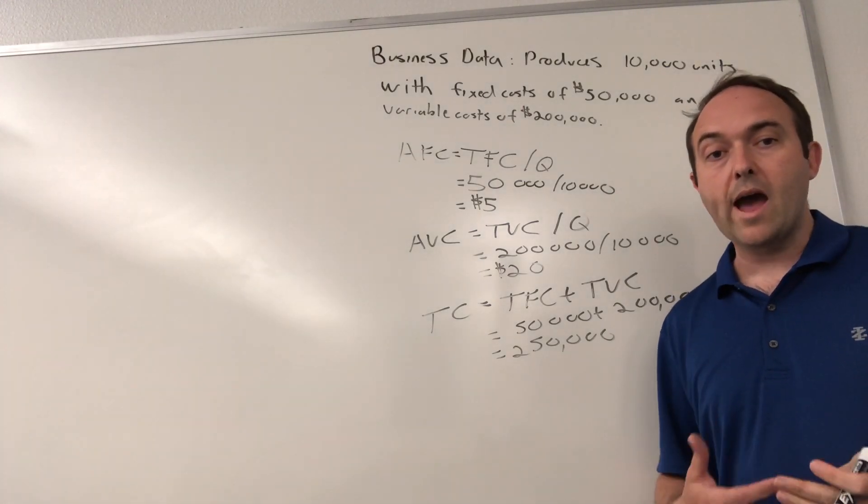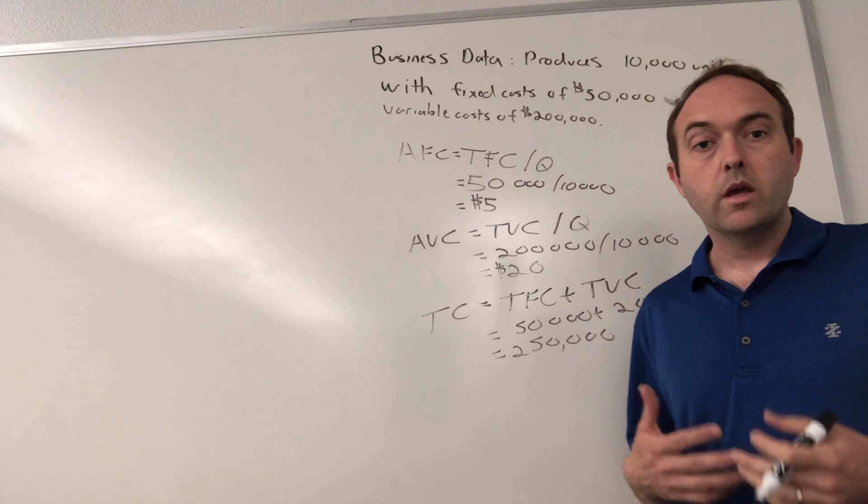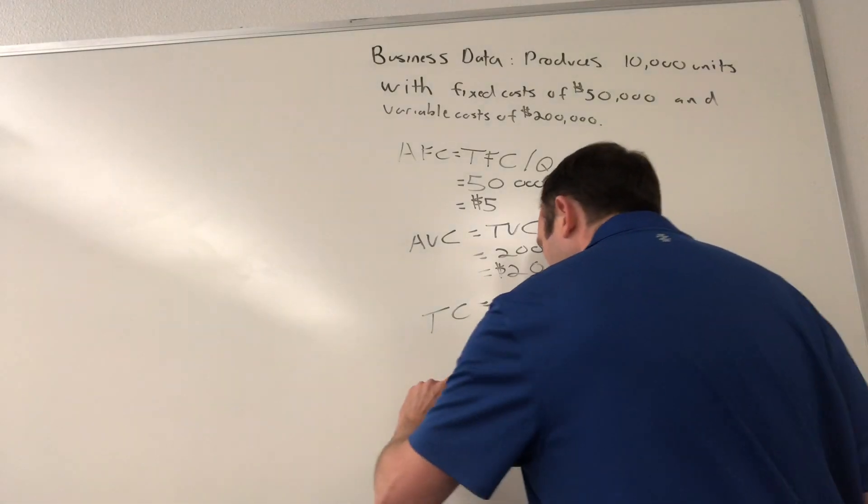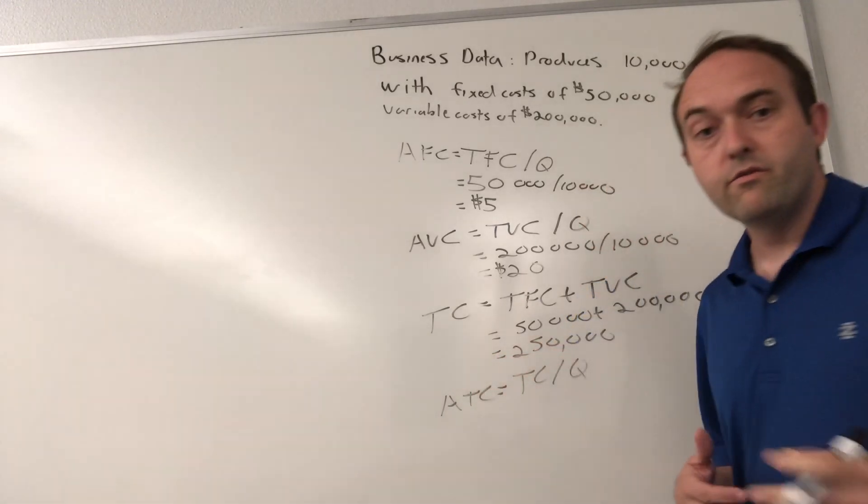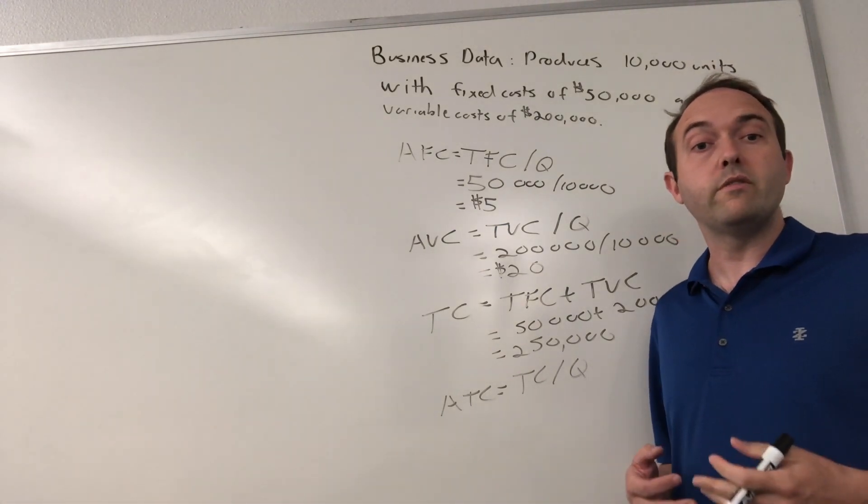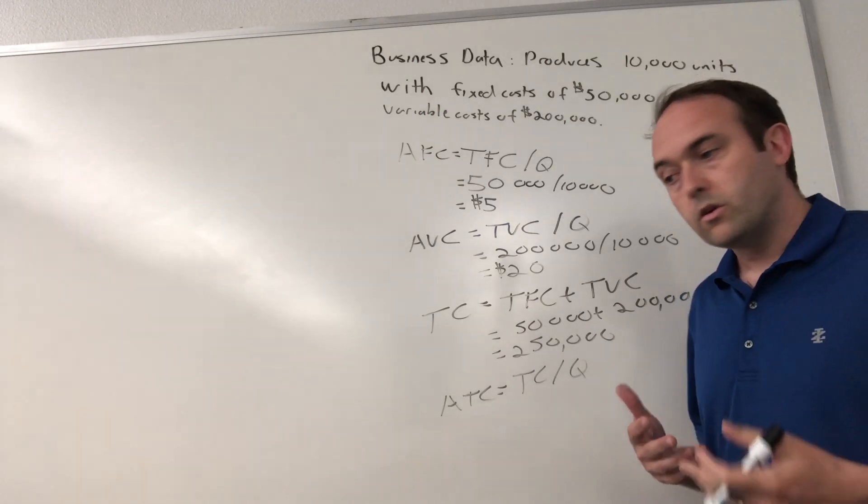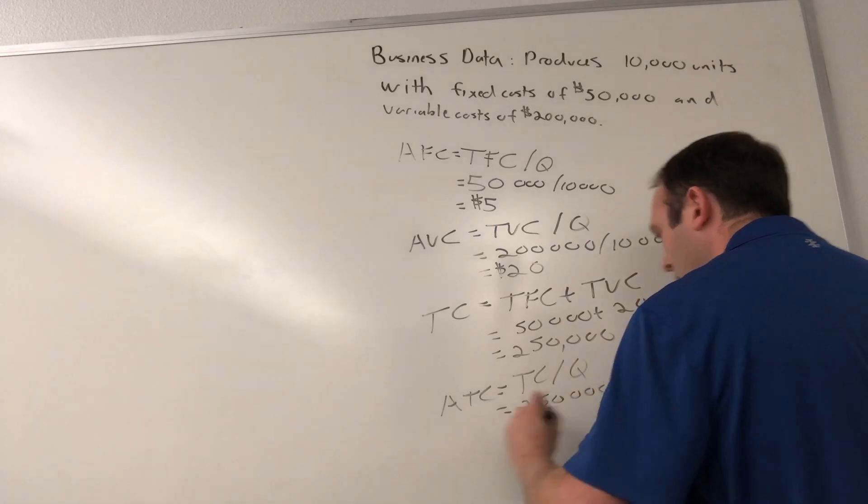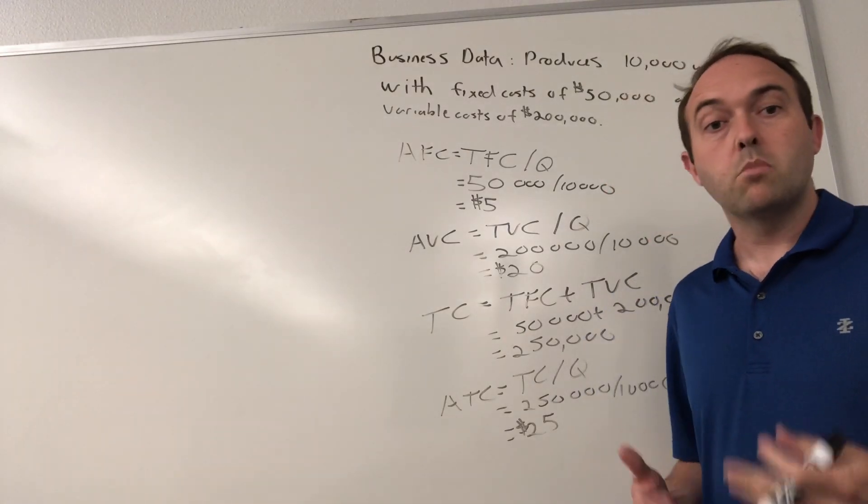Lastly, we're going to look at average total costs, or another way of saying that is your average cost per unit produced. ATC can be calculated as the TC divided by the Q. ATC equals your total cost divided by your quantity produced. In this scenario, we've established that total cost is $250,000 and our quantity is 10,000 units. So $250,000 over 10,000 gives you $25 as your average cost of production per unit produced.